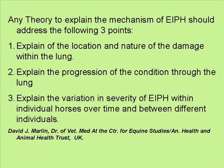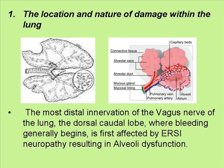Any theory to explain the mechanism of EIPH should address the following three points. Number one: explain the location and nature of the damage within the lung. Number two: explain the progression of the condition through the lung. And number three: explain the variation of severity of EIPH within individual horses over time and between different individuals. Regarding number one, the most distal innervation of the vagus nerve of the lung — the dorsal cordial lobe — where bleeding generally begins, is first affected by ERSI, resulting in neuropathy and alveolar dysfunction.